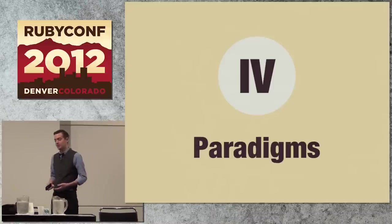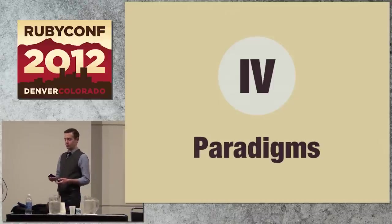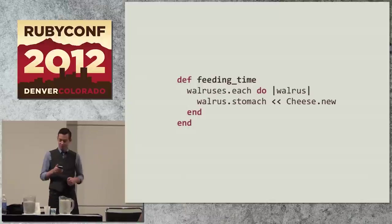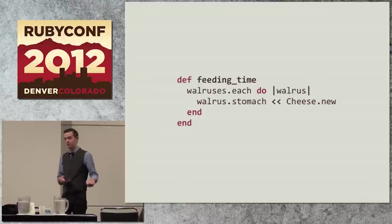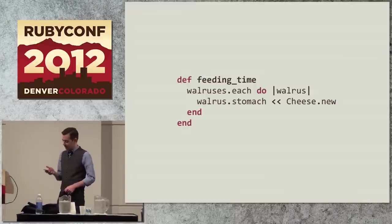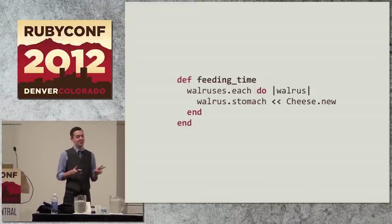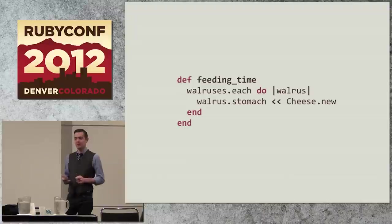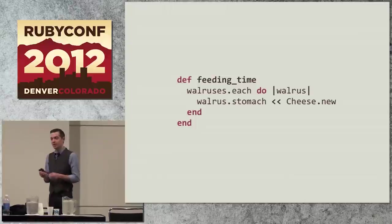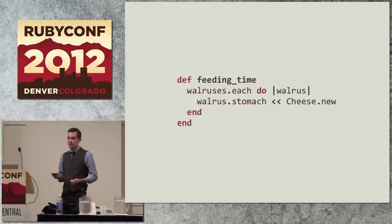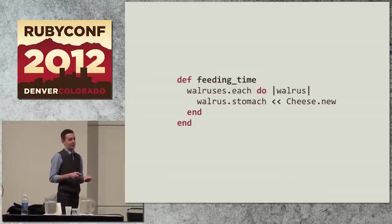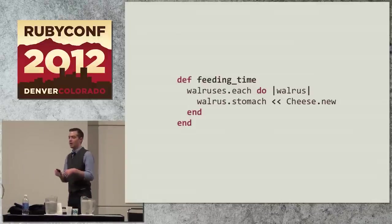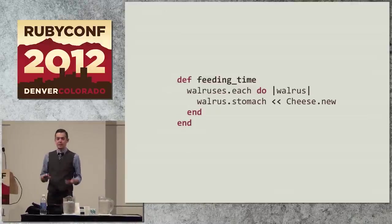We've seen isolated testing as a bit of background. The idea of converting the code in the system to communicate via values at the boundaries instead of via message sends or method calls at the boundaries. And now I want to look at how this fits into the three dominant programming paradigms, putting aside logic programming. How does this relate to procedural OO and functional programming? Here's a small piece of procedural code. We want to feed some walruses. So for each of the walruses, we shovel some food into its stomach. We shovel some cheese into the walrus' stomach. There are two properties of this code that make it very obvious that it's procedural. The first is the each.